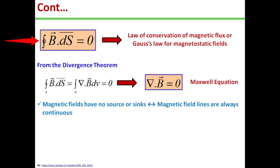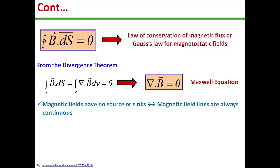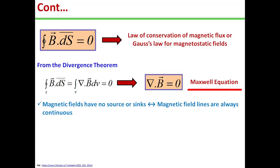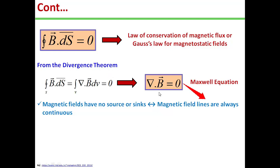Thus, the total flux through a closed surface in a magnetic field must be zero: closed surface integral B dot ds equals zero. This equation is referred to as the law of conservation of magnetic flux, or Gauss's law of the magnetostatic field. Although the magnetostatic field is not conservative, magnetic flux is conserved. By applying the divergence theorem and converting the surface integral to a volume integral, we get del dot B equal to zero, which is again a Maxwell equation. These two equations show that magnetostatic fields have no sources or sinks, and del dot B equal to zero suggests that magnetic field lines are always continuous.